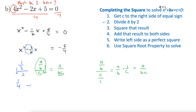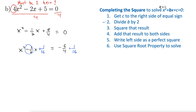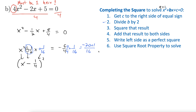Step 3 is to square the result. So we take 1 fourth and square it to get 1 sixteenth. Then step 4 says add that to both sides: plus 1 sixteenth on each side. Step 5: write the left side as a perfect square. To figure out what goes inside, we take the square roots of the first and last terms — x and one-fourth — then take the sign from the middle term. So that's x minus one-fourth squared. On the right, we need a common denominator: multiply by 4 over 4 to get all over 16. We have negative 20 plus 1 over 16, giving negative 19 sixteenths.